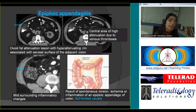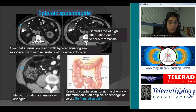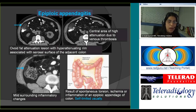Epiploic appendagitis is a condition we are seeing quite frequently as a cause of acute abdomen. These are fatty finger-like projections along the serosal surface of the colon that can get inflamed due to spontaneous torsion, ischemia, or inflammation. This is a self-limiting condition that resolves spontaneously with supportive management. When seen in the right lower quadrant, it can mimic appendicitis clinically, and CT is the way to diagnose it and prevent unnecessary surgery.